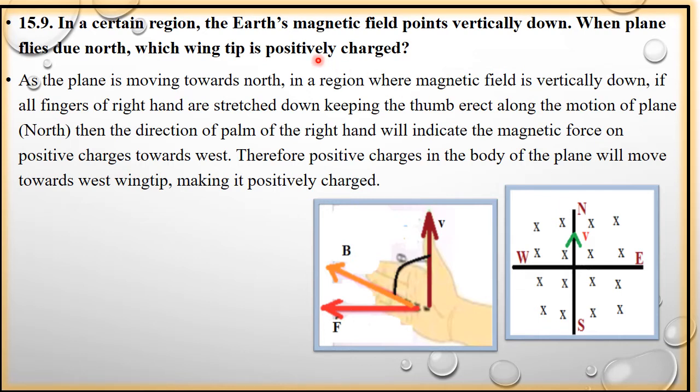Ab chunke plan agar move kar raha hai magnetic field mein, to plane pe kya lagegi, force lagegi. Aapne ye study kiya tha starting ke chapters mein, ki jab bhi kisi conductor ko magnetic field mein hum move kar rahe hain, to wo jab move kar raha hai, to us pe magnetic force act kar raha hai. Ab chunke plane move kar raha hai perpendicular to magnetic field, to us ke andar jo charges hain, basically unki motion ho rahi hai. Wo move kar raha hai with velocity v, perpendicular to magnetic field. Ab jab wo move kar raha hai, to us pe magnetic force act kar raha hai.